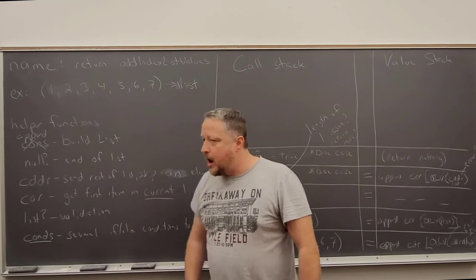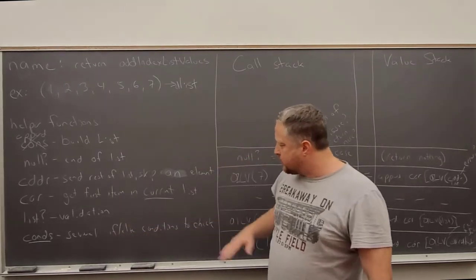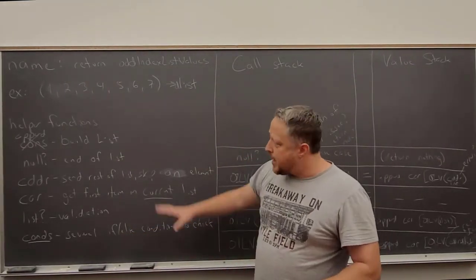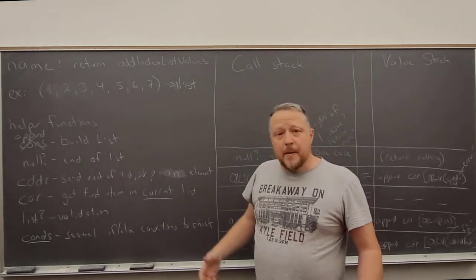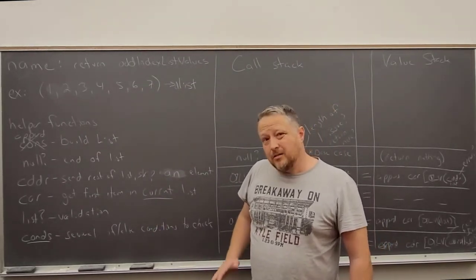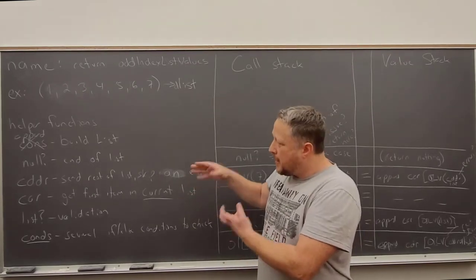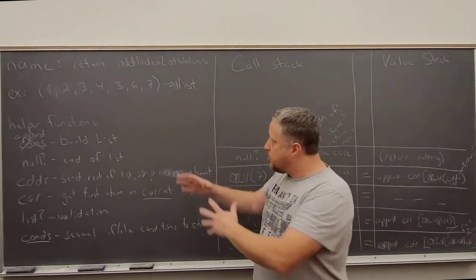And then I'm going to use a cons because I have several if-else conditions that I need to check. So that's helper functions. Could they be wrong? I bet some of them are. We'll see. But again, I'm listing things out I know I'm going to have to use in the code.